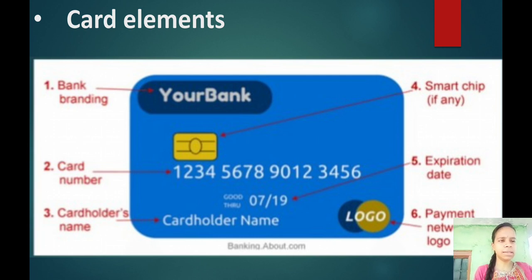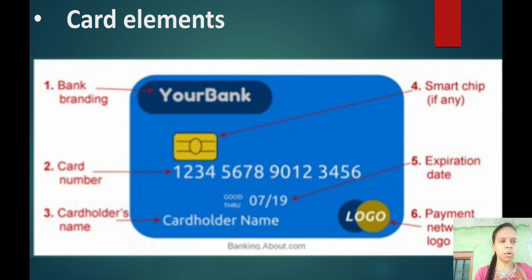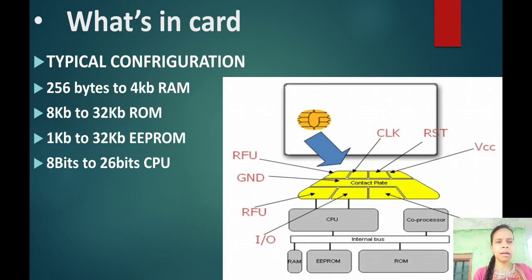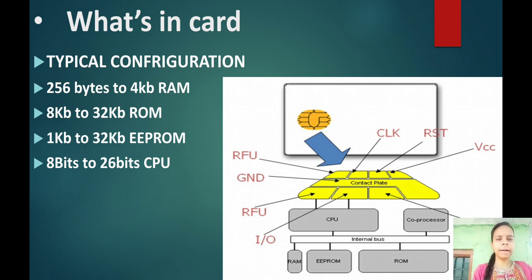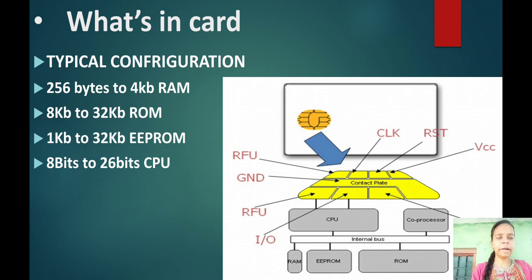The elements of the card include: bank branding, card number, cardholder's name, smart chip, expiration date, and payment network logo. The card contains 256 bytes to 4 KB RAM, 8 KB to 32 KB ROM, 1 KB to 32 KB EEPROM, and an 8-bit to 26-bit CPU.